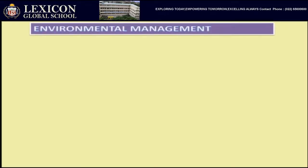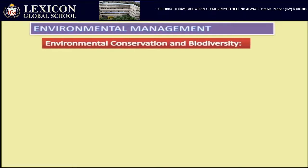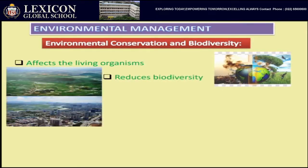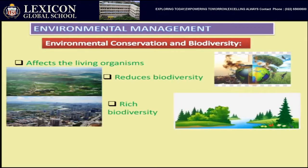We are going ahead with environmental conservation and biodiversity. Environmental pollution affects living organisms and reduces biodiversity. The living world had a rich biodiversity, but this richness is getting depleted at a very high rate due to various human activities.